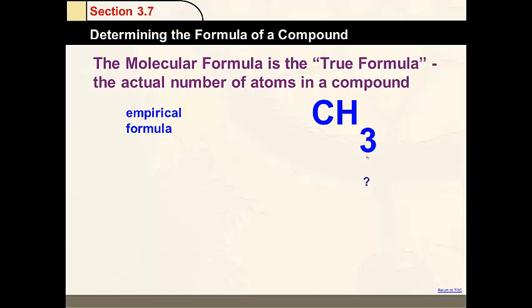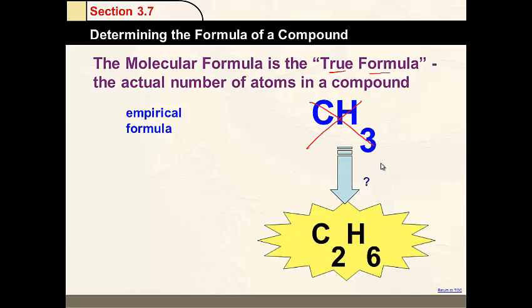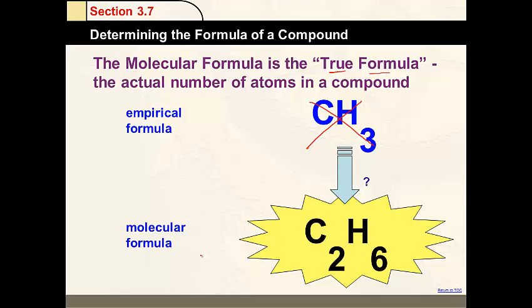Okay, so again, a molecular formula is the true formula. It's actual formula. An empirical formula is not. This doesn't really even exist. It's just a simplified ratio. But its molecular formula is real. So it's called ethane.